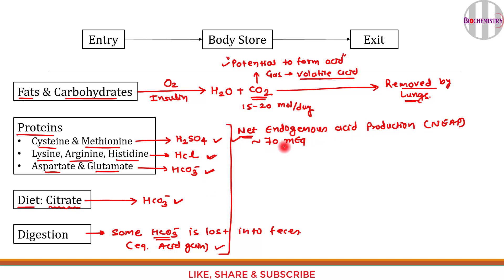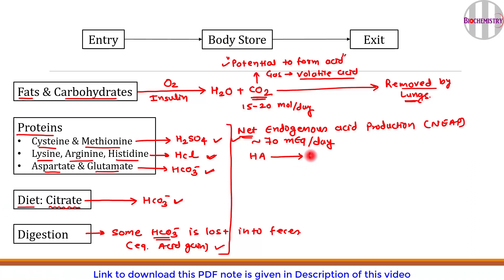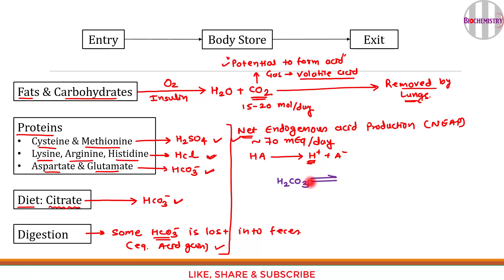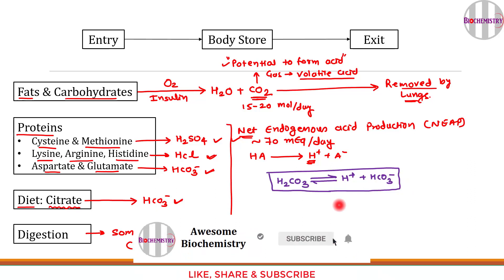It is estimated that approximately 70 milliequivalents of fixed or non-volatile acid is produced per day. This H⁺ is poured into the extracellular fluid, and if not handled carefully, it could cause a drop in pH and acidemia. However, this is prevented by the bicarbonate buffer system — H₂CO₃ in equilibrium with H⁺ and HCO₃⁻ — which is present in the extracellular fluid and will not let pH change greatly.